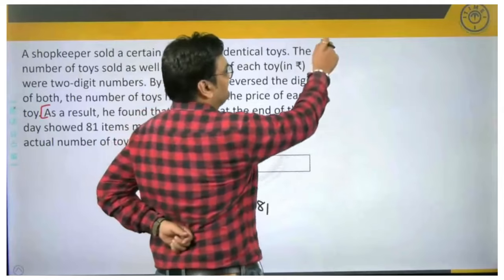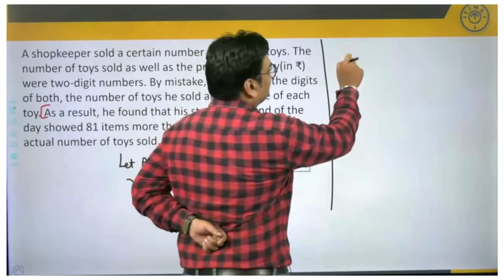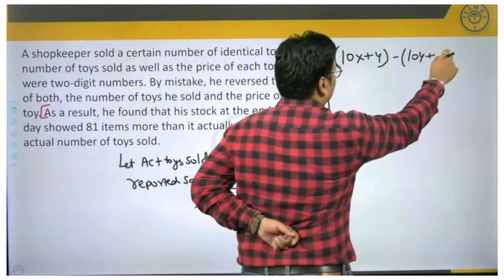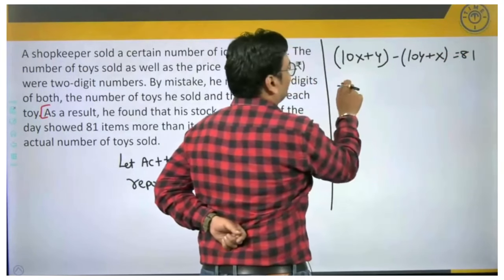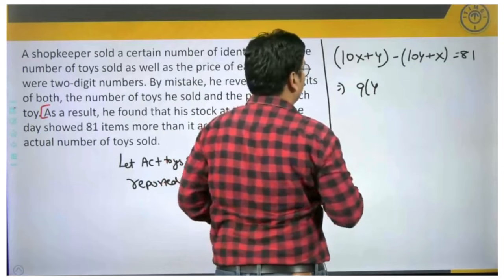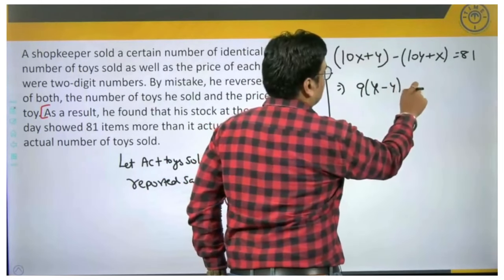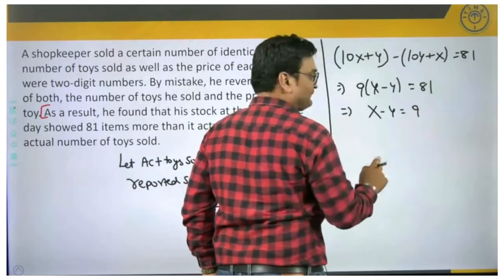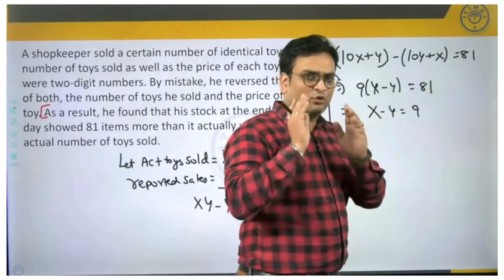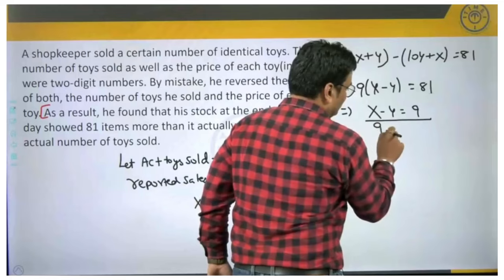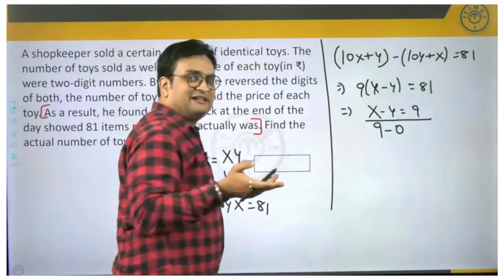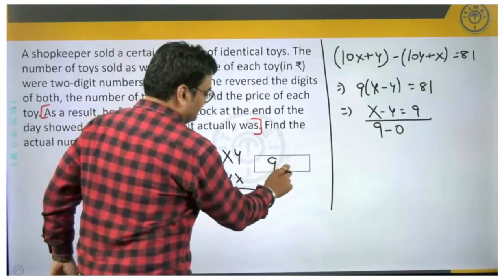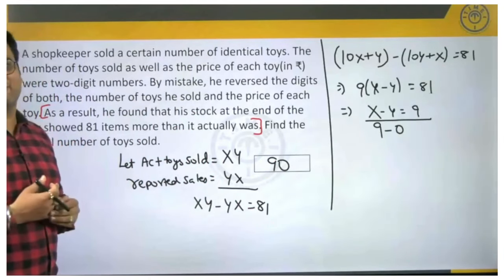Let me continue there. xy minus yx can be written as what? This is a two digit number x is in tens place, y is in units place, y is in tens place, x is in units place. So when you solve this, you will get 9 into (x minus y) will be 81. Hence x minus y is 81 by 9 which is 9. Difference of two digits is 9 only in one case which is 9, comma 0. Thus x is 9 and y is 0. If x is 9 and y is 0, he is asking us find actual number of toys sold, it is only 90. Actually there were 90 toys which were sold.